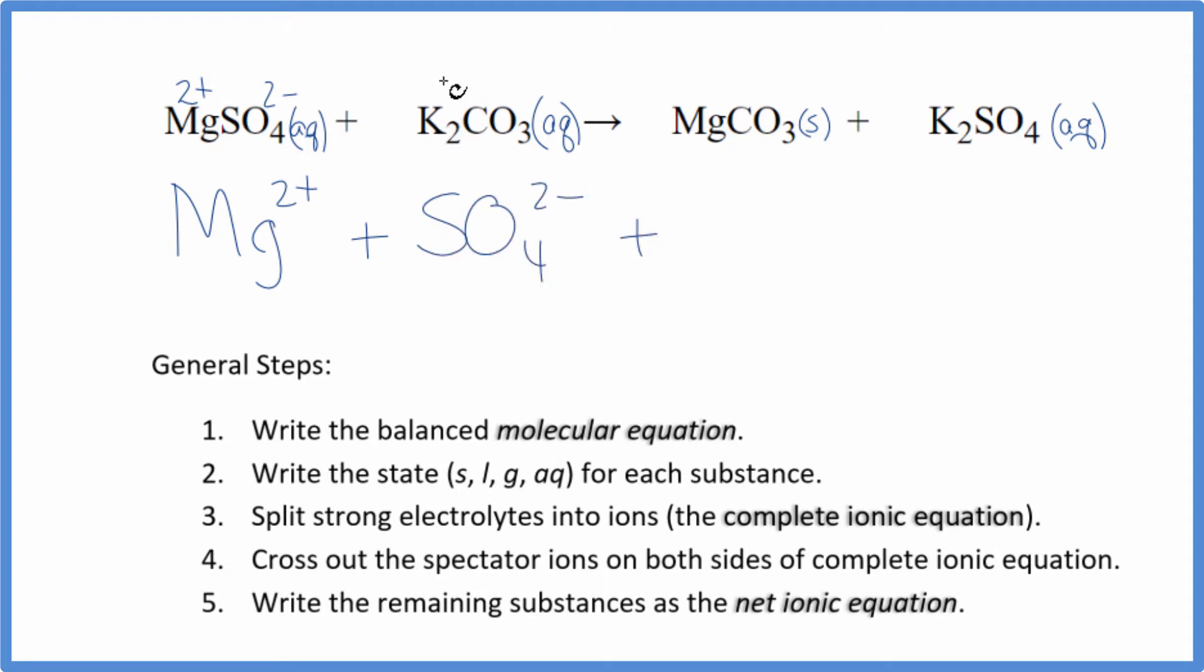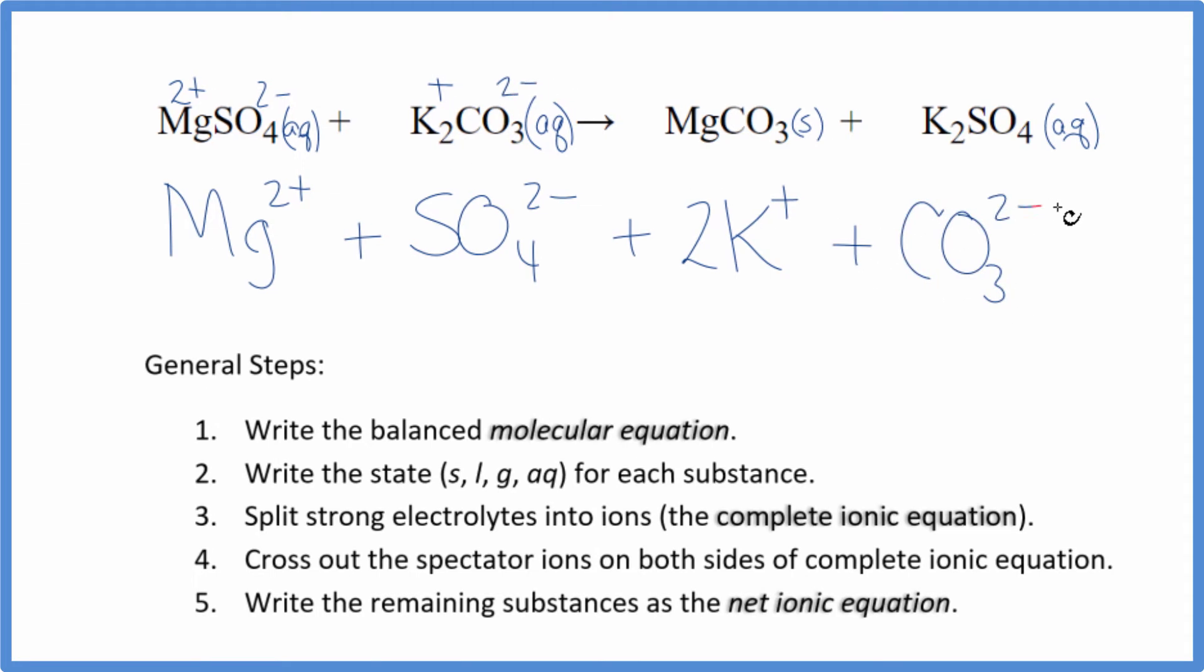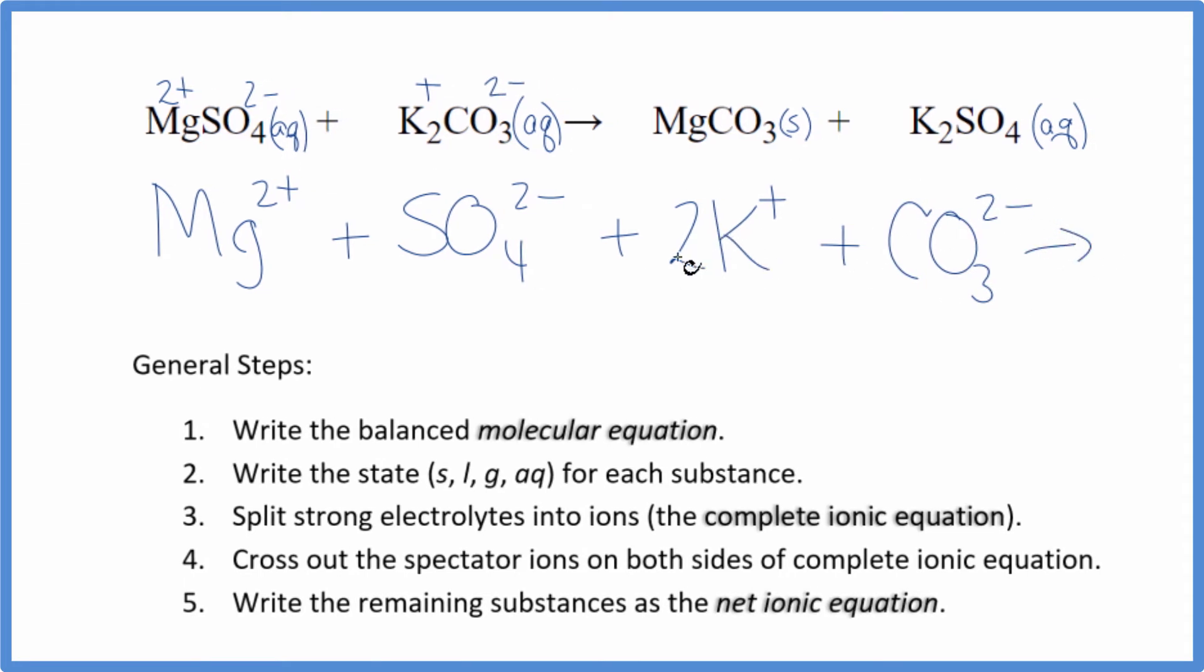And then we have potassium, group 1 on the periodic table. We have two of them. So we're going to have 2K plus. We said carbonate, this is also 2 minus, so we'll have the carbonate ion. These are the reactants in our net ionic equation.